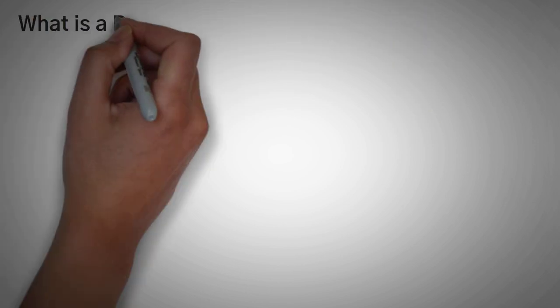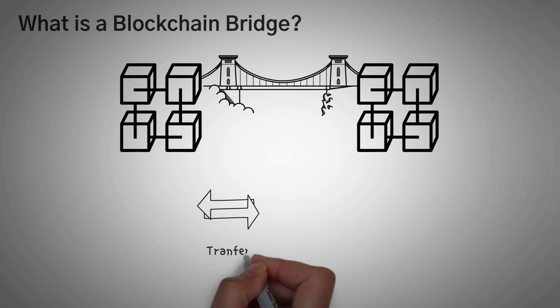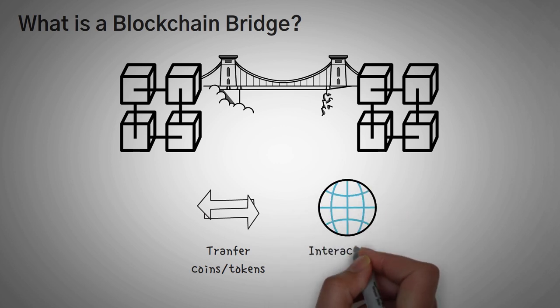What is a blockchain bridge? A blockchain bridge is a connection that allows the transfers of tokens or other data from one chain or network to another chain or network, which allows the ability to interact with another chain's decentralized applications.